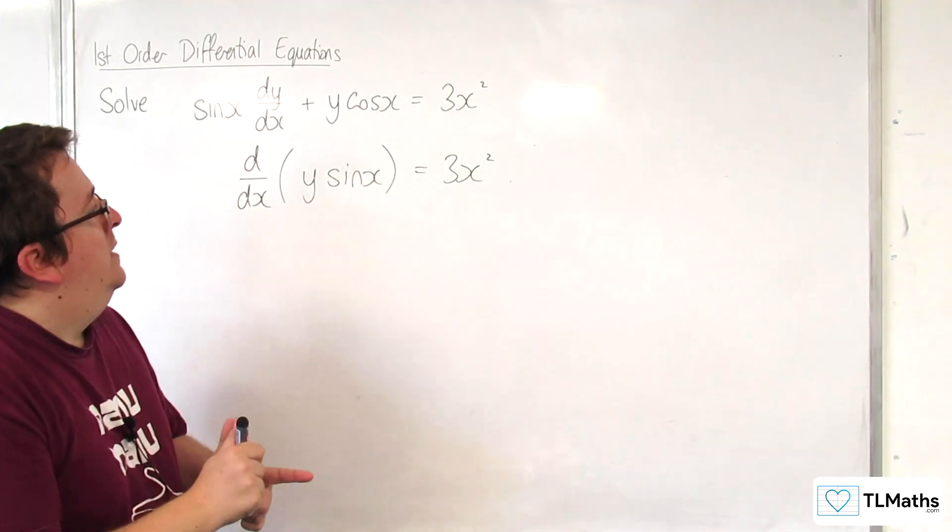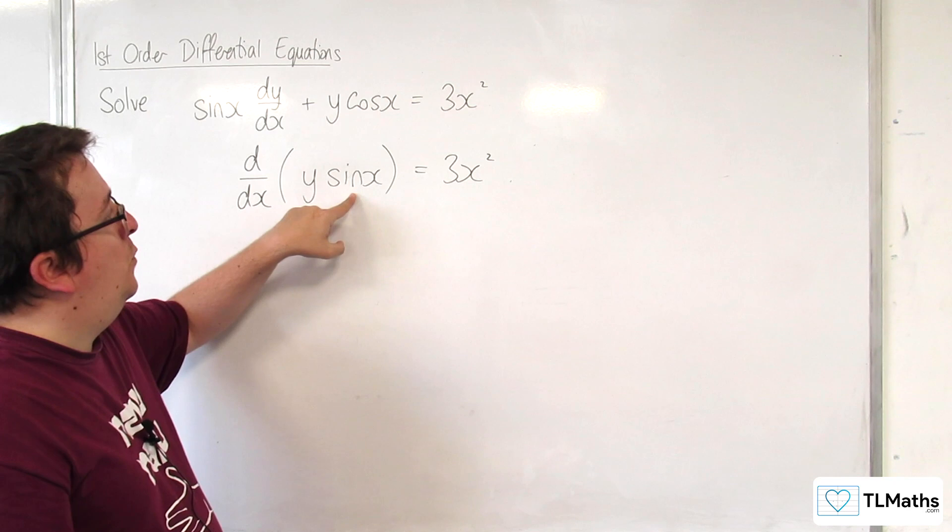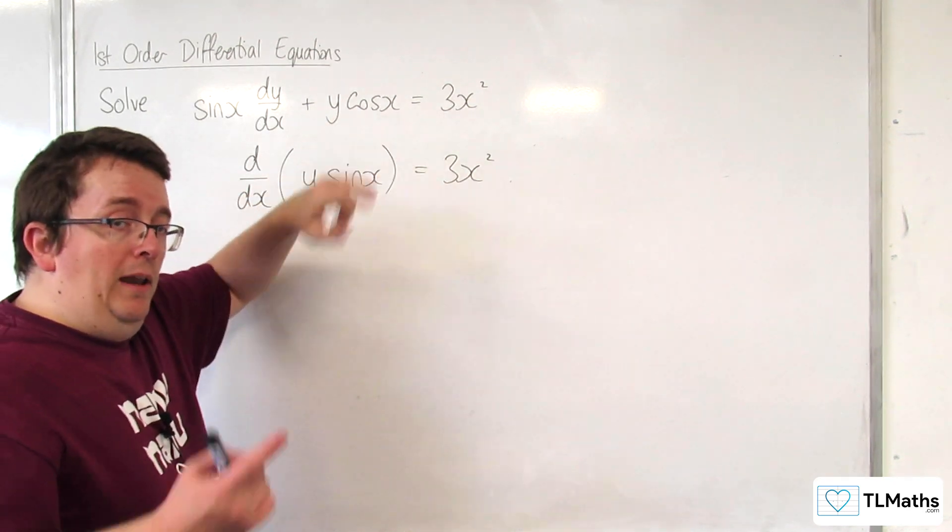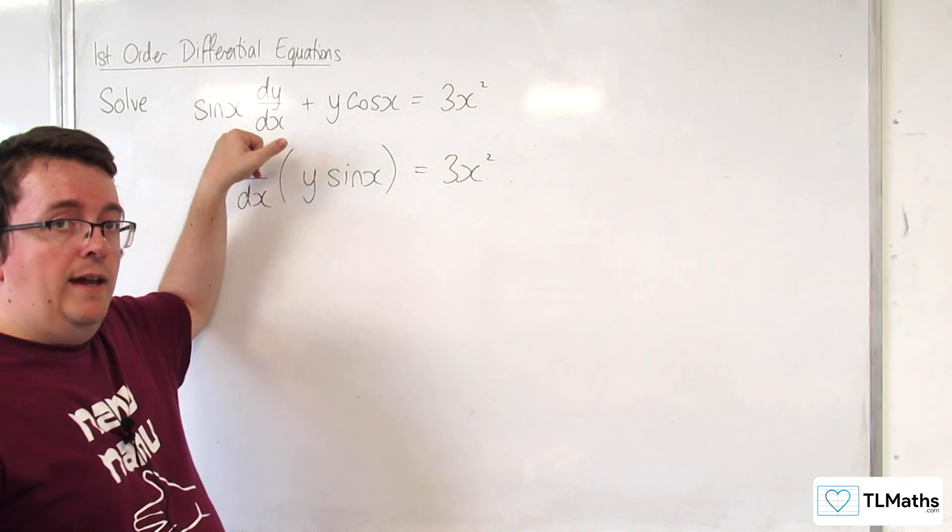Now let's just check that, because this would be y times the derivative of sine x. So y cosine x plus sine x times the derivative of y, which is sine x dy by dx.